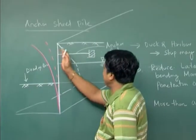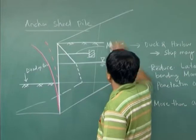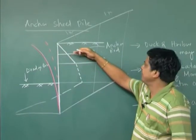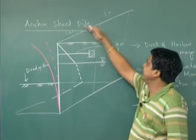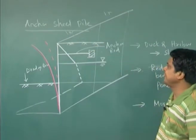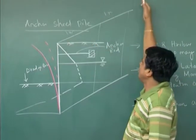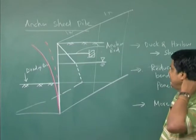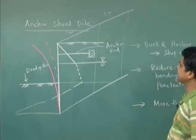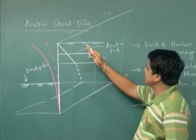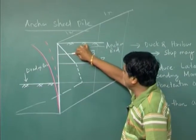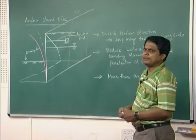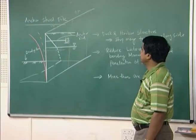Generally the wall design is done per meter width. Anchors may be provided not just one — multiple anchors can be provided along the depth direction. In one meter depth, you can provide two or three anchors and it will continue the same way, reducing bending moment. For more factor of safety, anchors can be provided in both length and depth directions. This is the advantage of anchored sheet pile.